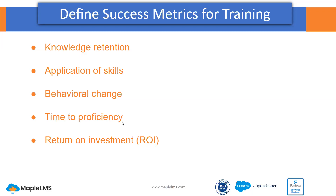One of the items is time to proficiency, which is also really helpful. This metric measures the time it takes for trainees to become proficient in the skills they learned in a training program. It can be measured through a variety of tools, including assessments or feedback from supervisors or mentors. With some learning management systems, you might find tools such as competency frameworks or learning plans that help you identify the proficiency of a learner, employee, or member. And lastly, return on investment — this metric measures the financial return on the investment made in the training program, calculated by comparing the cost of the training to the financial benefits that result from the improved performance of the trainees.